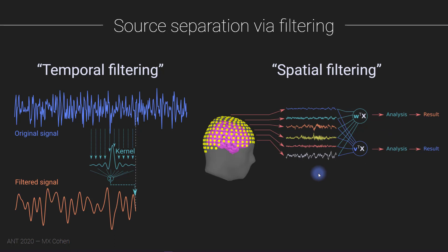This is also related to dimensionality reduction. We start off with 256-dimensional data, where each channel corresponds to a dimension. In this picture, I've reduced the dimensionality down to two — from 256 dimensions down to two — but presumably these two dimensions give us more meaningful insights into the brain compared to looking at each of the individual 256 dimensions.